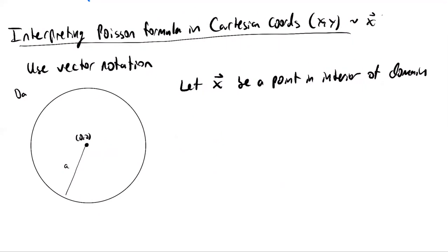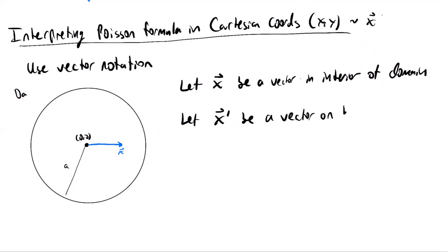In order to relate these to the formula, we introduce polar coordinates. Suppose vector x is given by (r, theta) in polar coordinates, and x prime is given by angle phi — since x prime is on the boundary, its length is always equal to a. The angle phi denotes x prime, so in the picture, phi is the angle x prime makes with the horizontal axis.